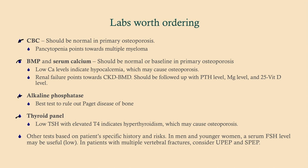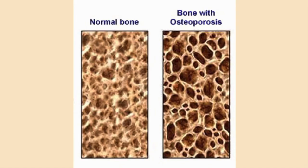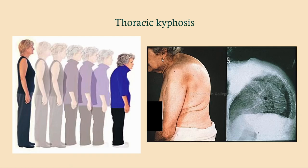Useful labs include CBC, BMP, serum calcium, alkaline phosphatase, and thyroid panel. If you see punched-out lesions on x-ray, think multiple myeloma and get a UPEP and SPEP. For younger patients, think hypogonadism. It really depends on the patient's specific history and risks.